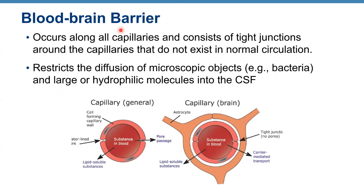The blood-brain barrier occurs along all capillaries in the brain and consists of tight junctions around the capillaries that do not exist in normal circulation. Astrocytes have feet that surround the capillaries in the brain, forming a protective layer that prevents many substances — such as blood-borne pathogens, microorganisms, and viruses — from moving from blood into the brain. This barrier restricts the diffusion of microscopic objects like bacteria and large or hydrophilic molecules into the CSF.